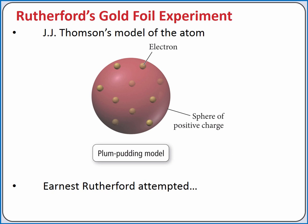With the discovery of the electron, this negatively charged component of the atom, scientists knew there also had to be positive charge in the atom if it is overall electrically neutral. So J.J. Thomson proposed the plum pudding model of the atom, where the electrons, negatively charged, are embedded in a sphere of positive charge, much like raisins are embedded in plum pudding.